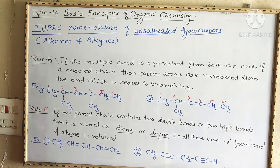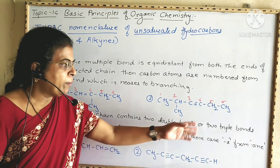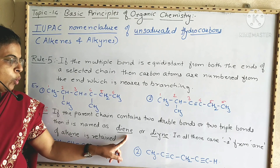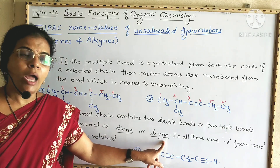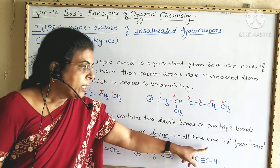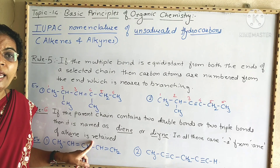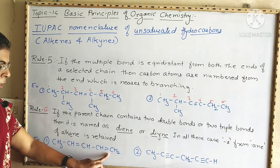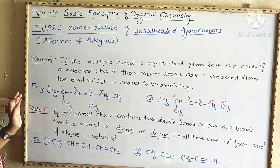Rule six: if the parent chain contains two double bonds, it is named as diene (D-I-E-N-E); if it contains two triple bonds, it is named as diyne (D-I-Y-N-E). The 'a' from -ane of the alkane is retained in these cases. In the first example, there are two double bonds, and the end nearer to a double bond is chosen for numbering: one, two, three, four, five — five carbon atoms, so parent alkane is pentane.